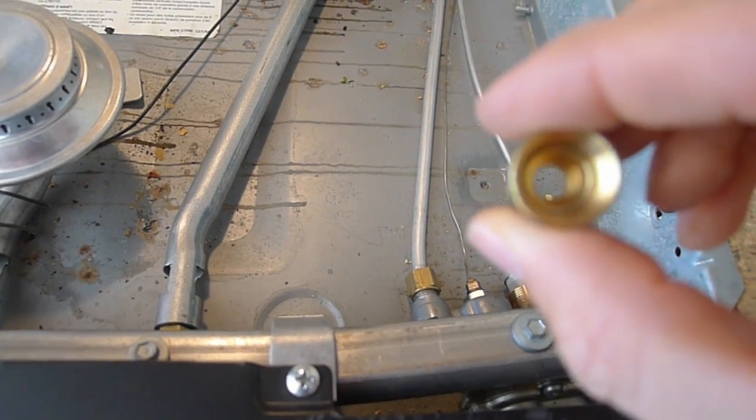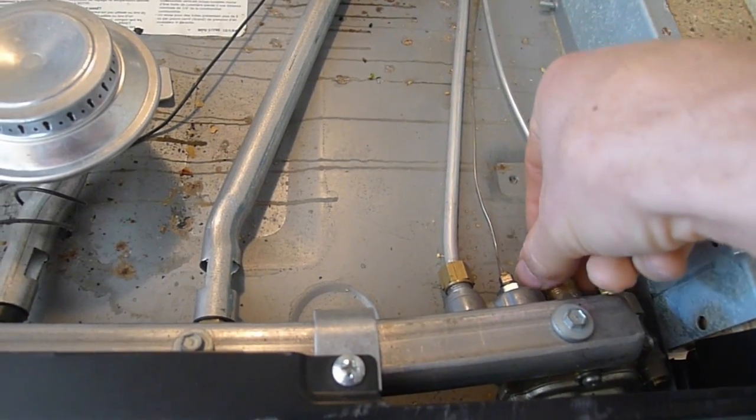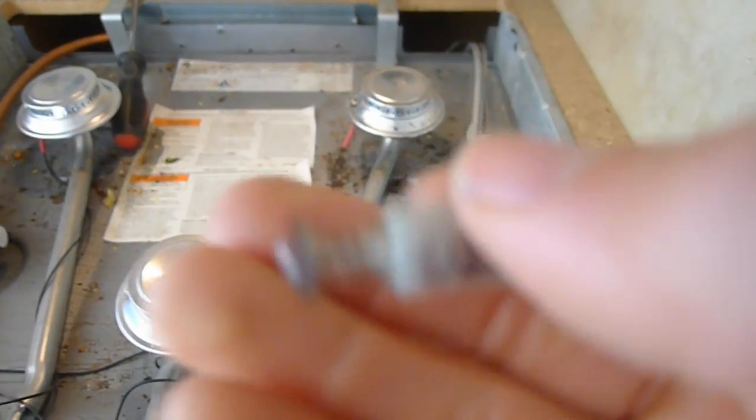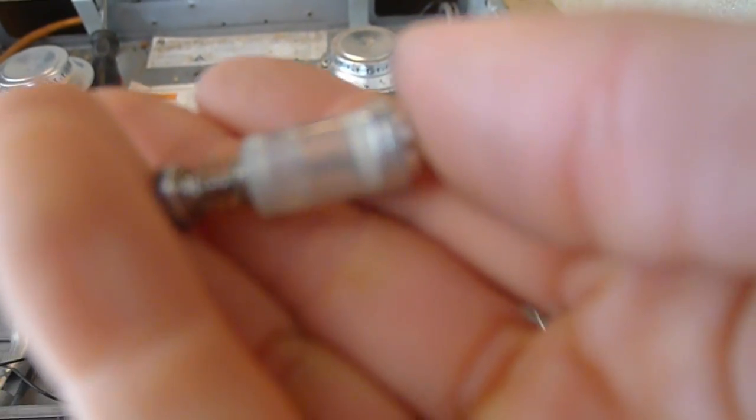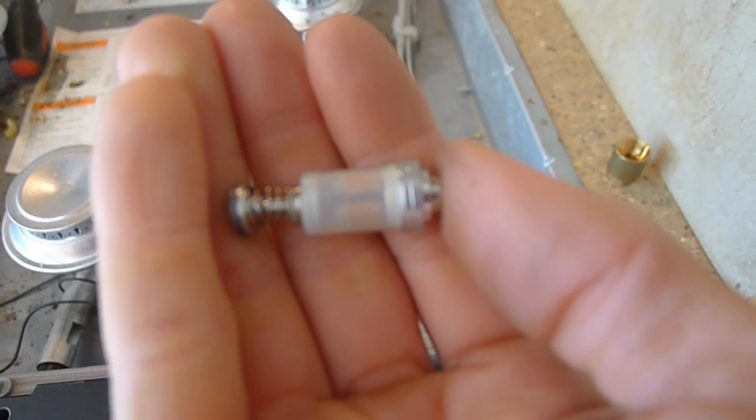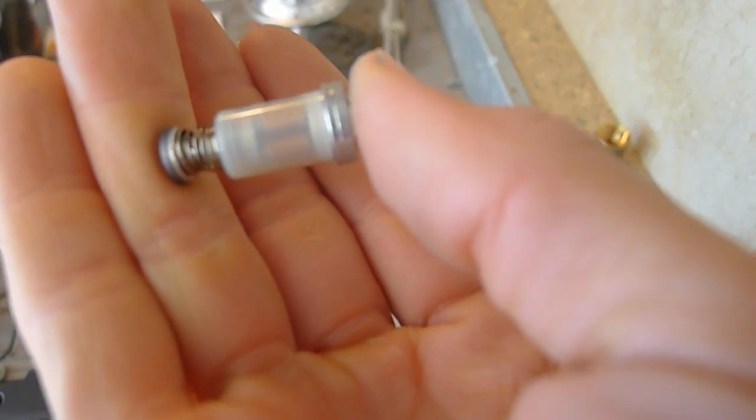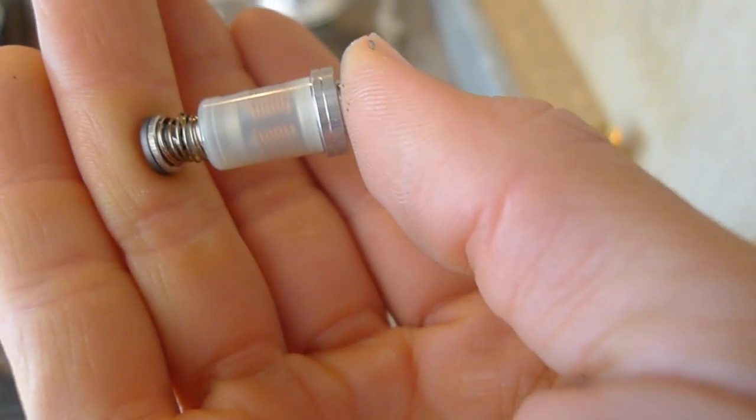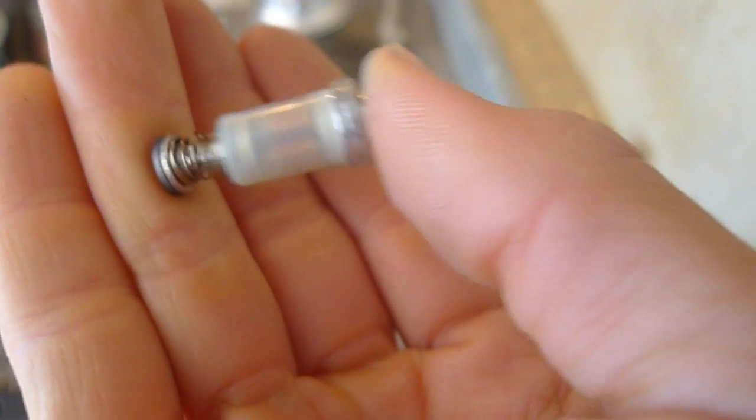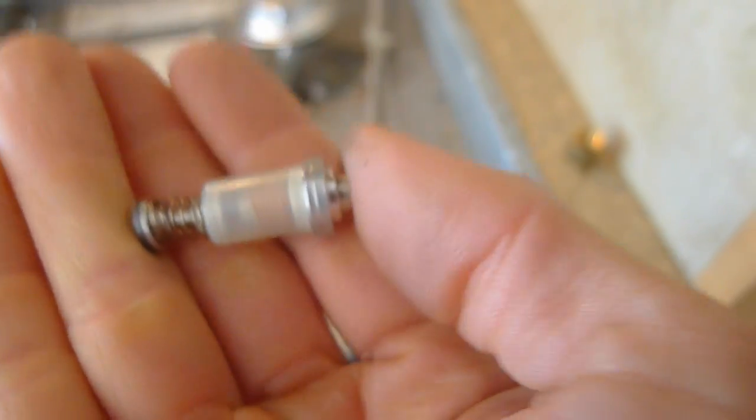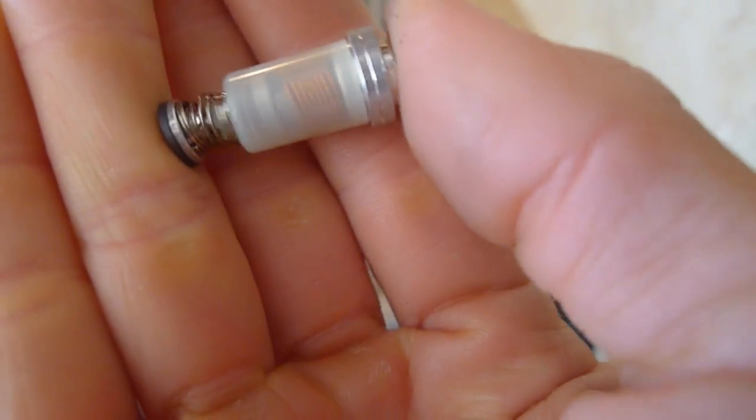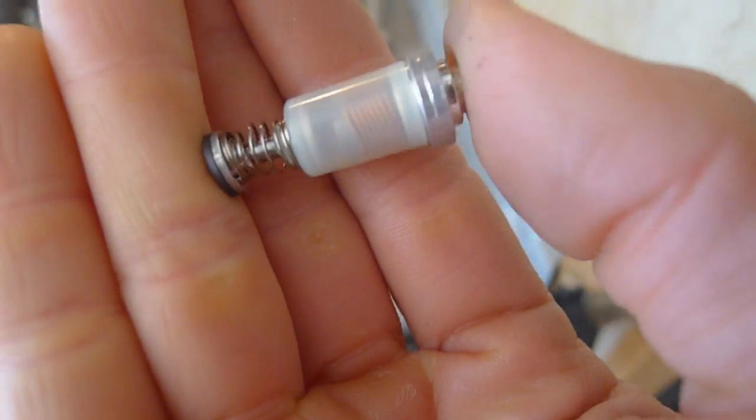This is just a cap. It senses the certain voltage within the thermocouple. If you... this focuses again... it depresses this spring which opens the valve that allows gas to go through. There's nothing really that can go wrong with this as long as it seems like it operates correctly.